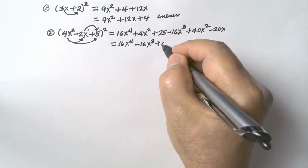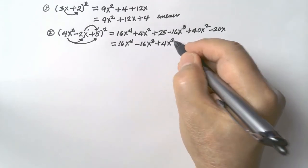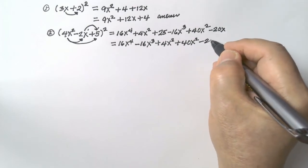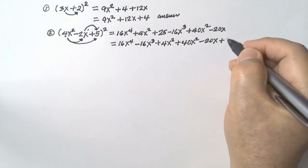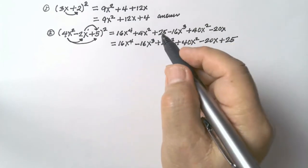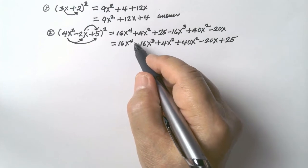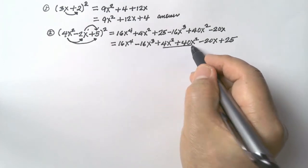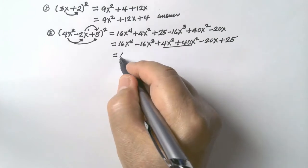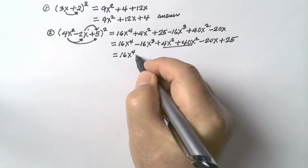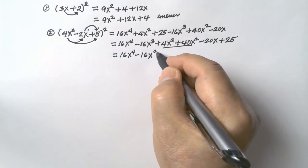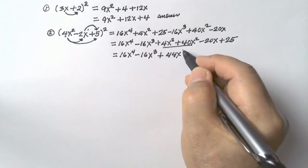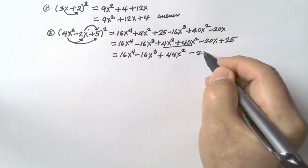Plus 4x squared plus 40x squared minus 20x plus 25. Let us check whether the exponents are in descending order: 4, 3, 2, 2, 1. So these are similar terms — combine them. We now have 16x to the exponent of 4 minus 16x cubed, plus 44x to the exponent of 2 minus 20x.